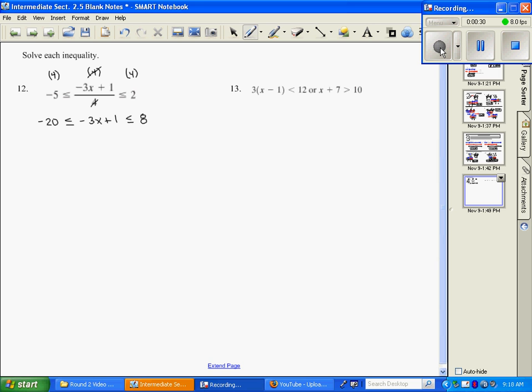Now I want to get x by itself, so subtract 1 from all sides. So negative 21 is less than or equal to negative 3x. Now I'm going to divide all sides by negative 3.